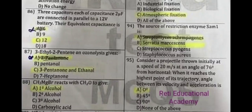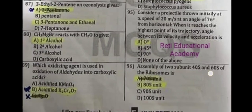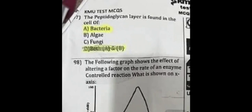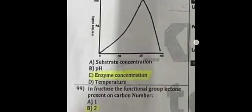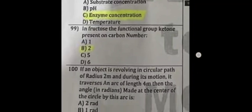Question number 95: A projectile thrown initially at a speed of 20 m/s at an angle of 76° from horizontal — when it reaches the highest point of its trajectory, the angle between its velocity and acceleration is 90 degrees. Question number 96: The assembly of two subunits 40S and 60S of ribosomes forms an 80S unit. Question number 98: The following graph shows the effect of altering substrate concentration on the rate of an enzyme-controlled reaction — what is shown on the x-axis? The correct answer is enzyme concentration.